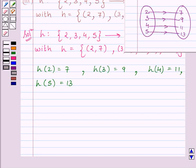Or we can say, all the elements of the set {7, 9, 11, 13} are the image of some element of the set {2, 3, 4, 5}. So we can write, H is a one-to-one and onto function.